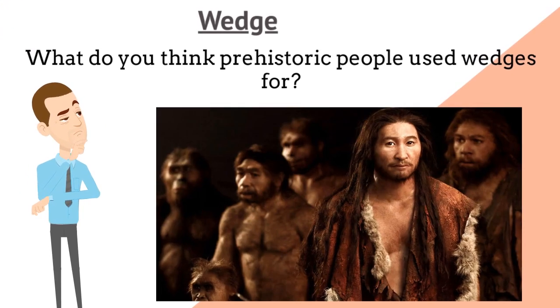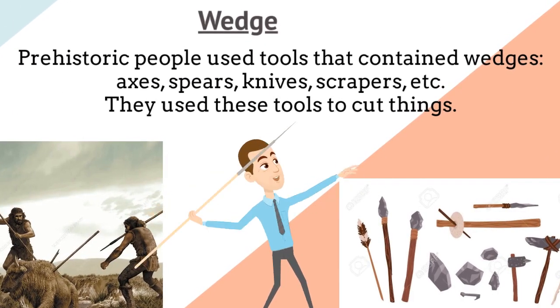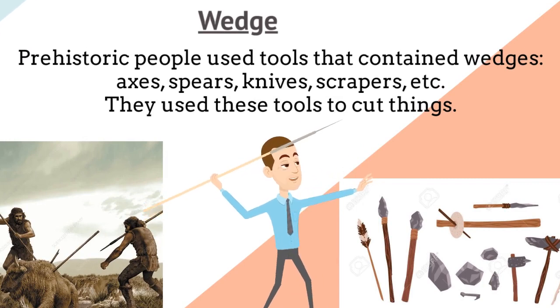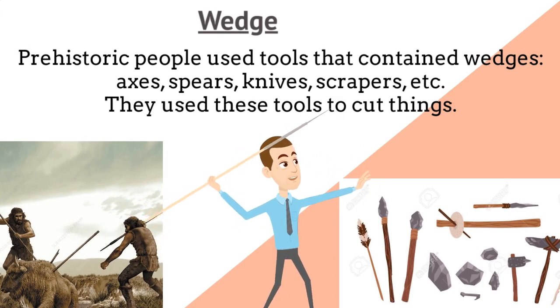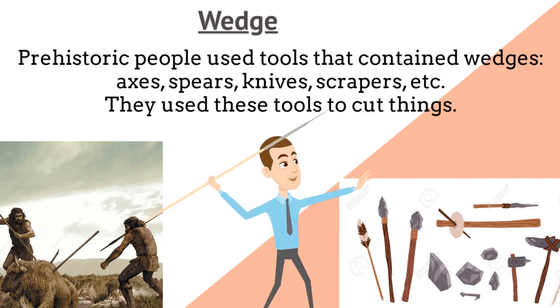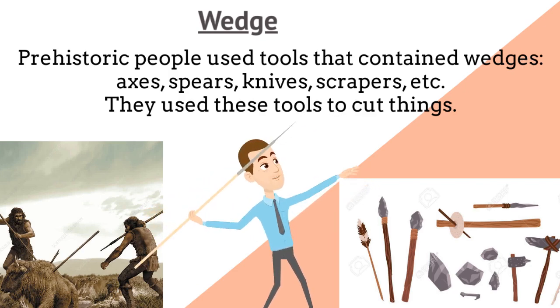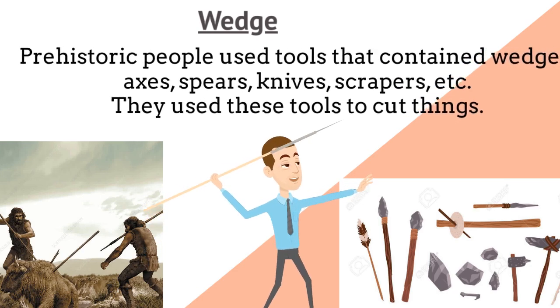What do you think prehistoric people used wedges for? Prehistoric people used tools that contained wedges — axes, spears, knives, scrapers, etc. They used these tools to cut things.